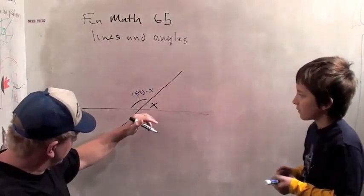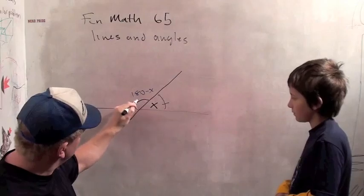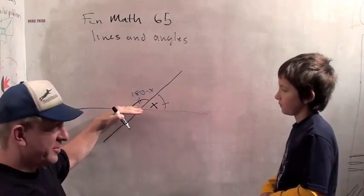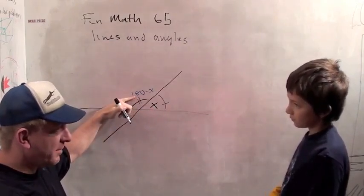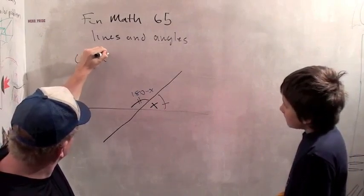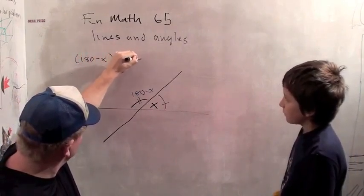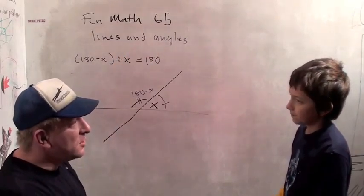Okay, very good. Because this angle here, plus this angle here, form a straight line. So they have to add up to 180. So if this is x, this is 180 minus x, because 180 minus x, plus x equals 180.